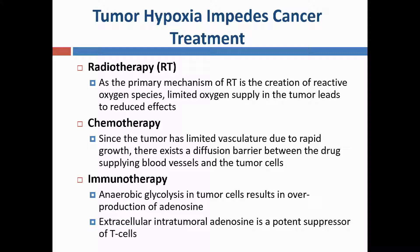Immunotherapy is affected by hypoxia due to the change in metabolism in tumor cells to anaerobic glycolysis, which results in overproduction of adenosine. Extracellular intratumoral adenosine is a potent suppressor of T cells.